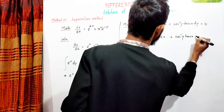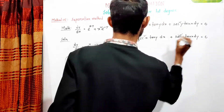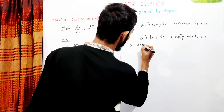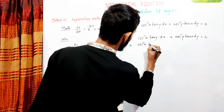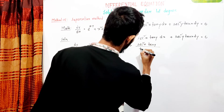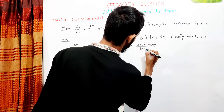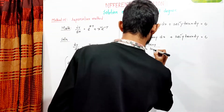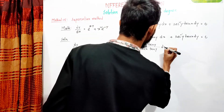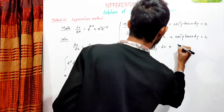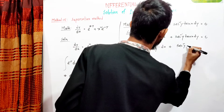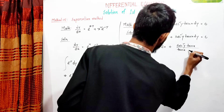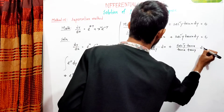For the next problem, we have tan x dx. The equation involves tan x and tan y terms. We have 10x, 10y — that is tan x, tan y — so the equation is tan x tan y dx plus tan y dx, and the task gives us tan x tan y dx.